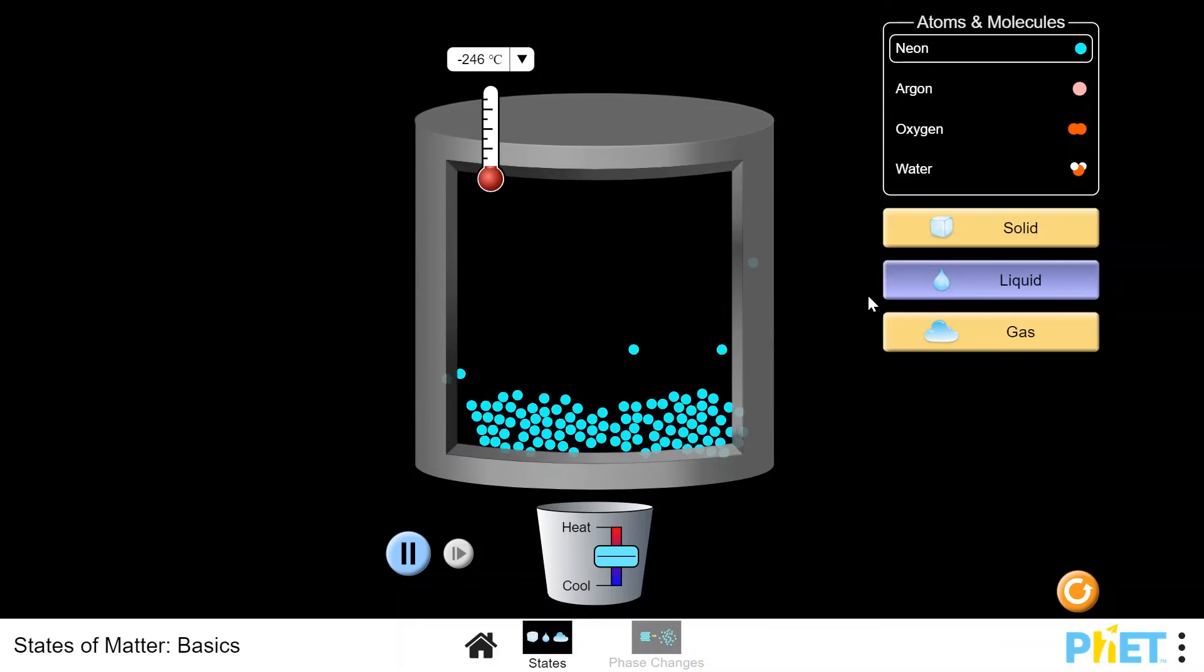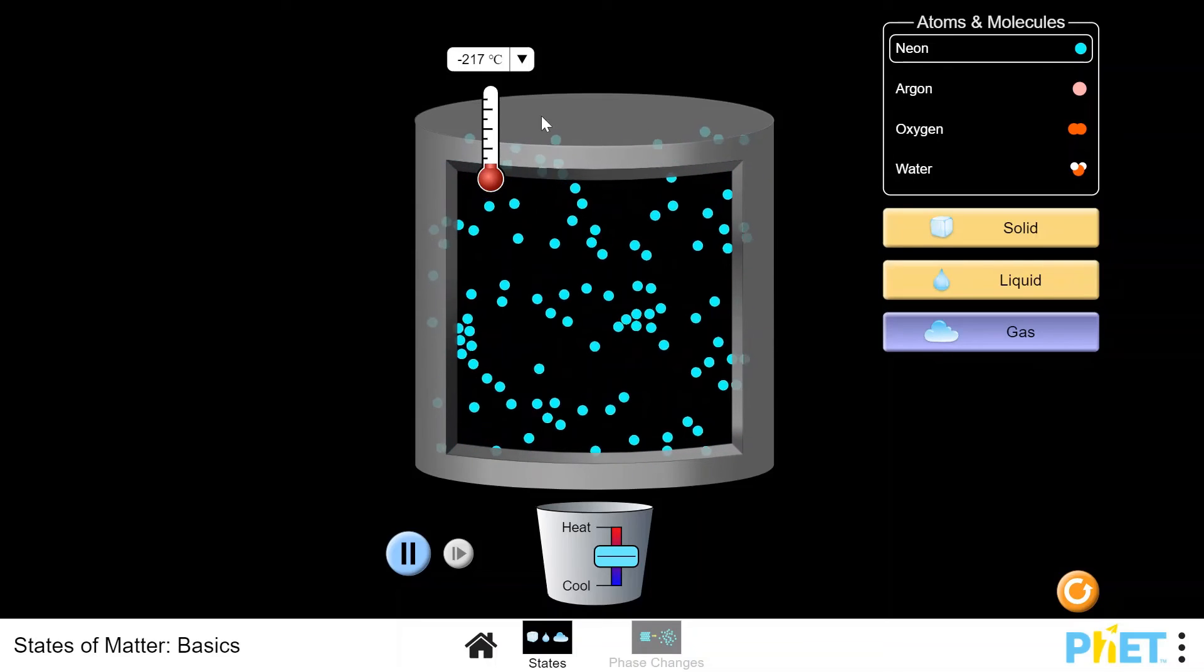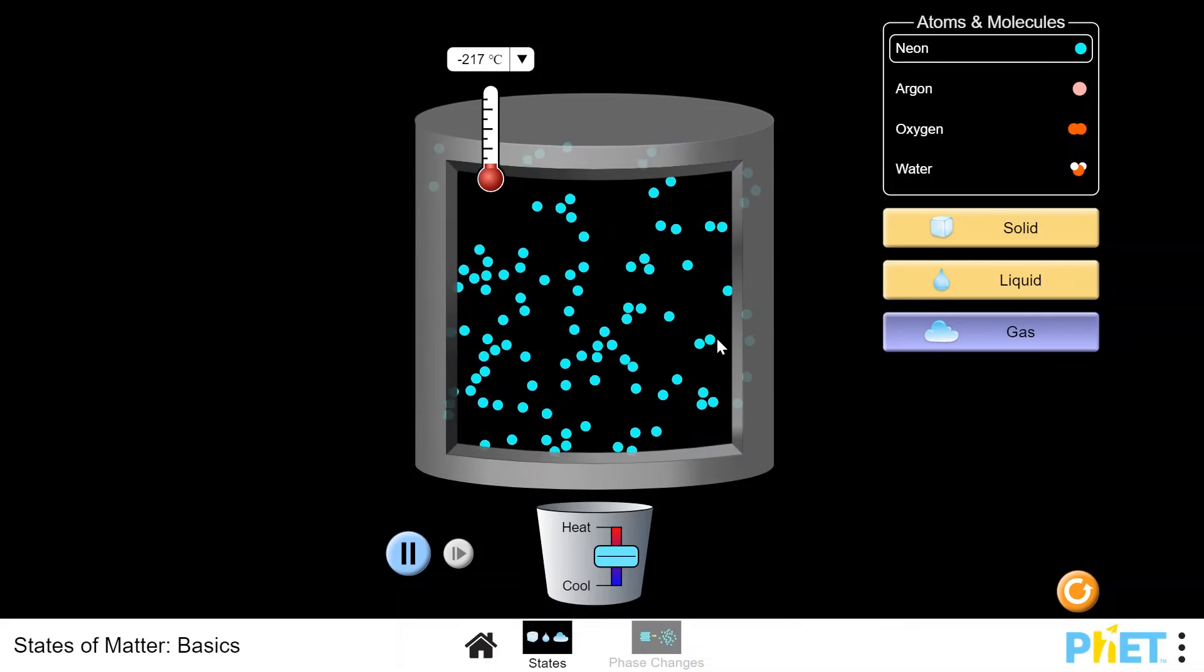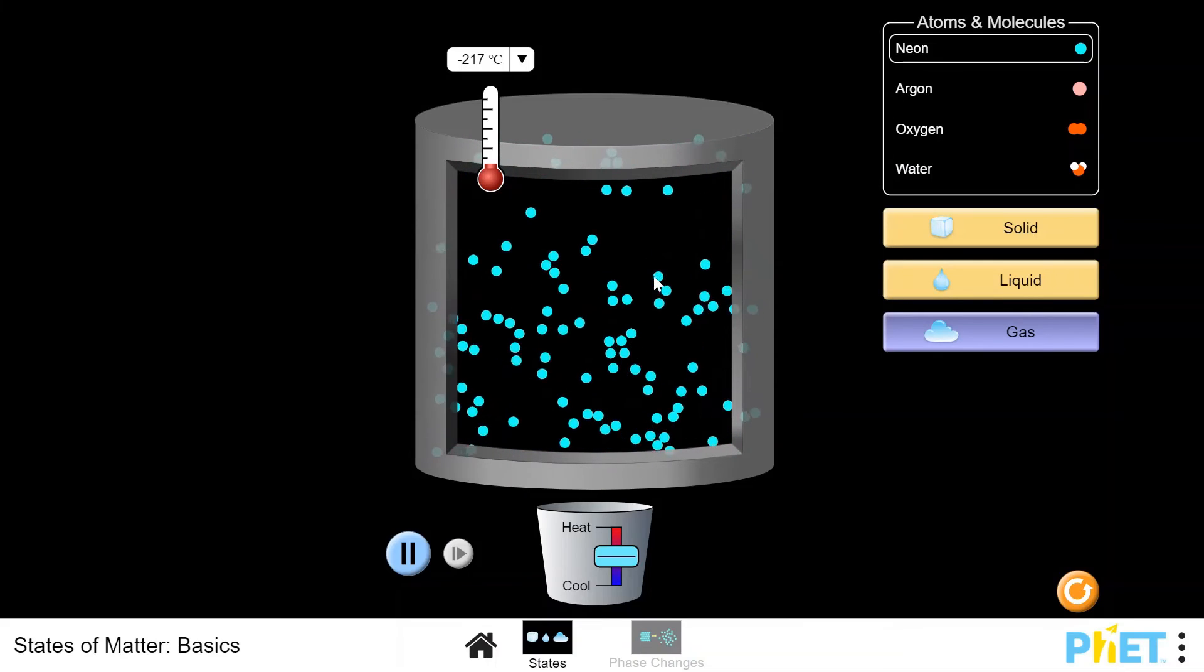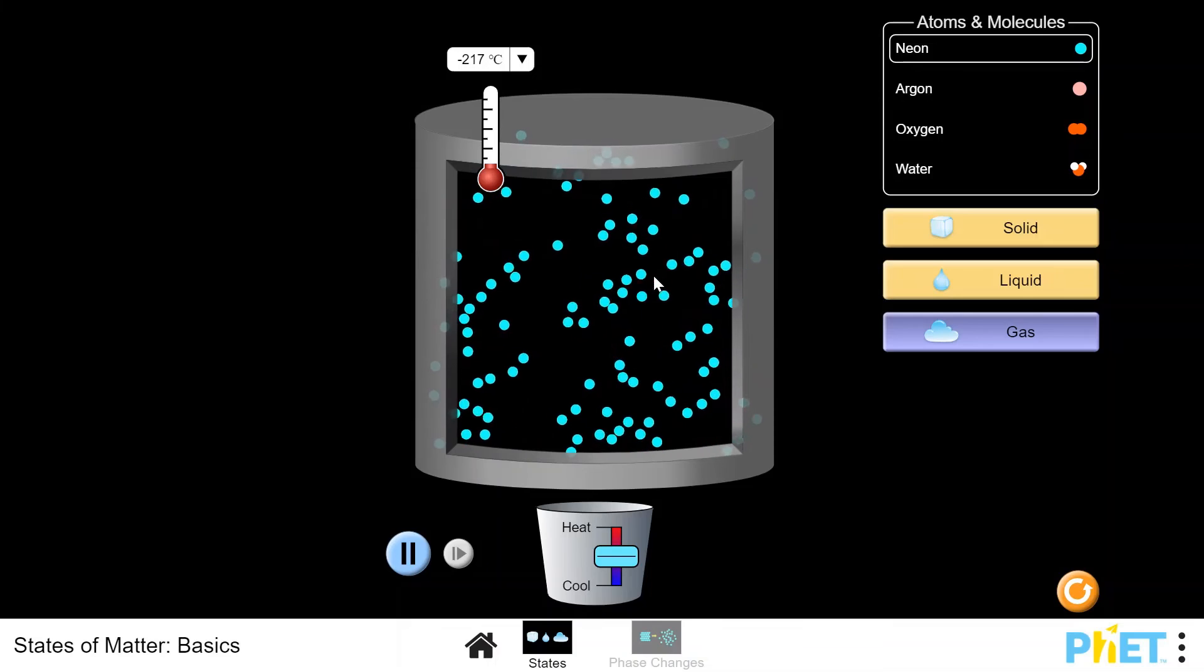If you keep heating, at negative 217 degrees Celsius, neon is a gas. The atoms are now moving rapidly and in random directions, and there is a lot of space between the atoms.